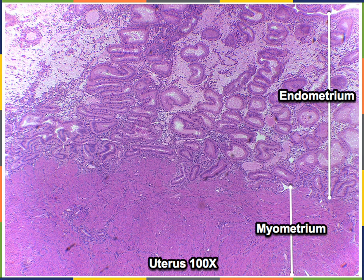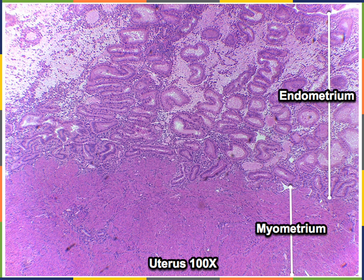Here we see the histology of the uterus at 100× magnification. The majority of the uterine wall is the smooth muscle layer, the myometrium. Adjacent to the myometrium is the endometrium, a mucous membrane with two layers: the stratum basalis, the deep basal layer containing the secretory regions of the uterine glands and loose areolar connective tissue with numerous capillaries, and the stratum functionalis, which contains the epithelium and the ducts of the uterine glands, lines the lumen, is shed with menstruation, and regrows during the proliferative phase of the uterine cycle.